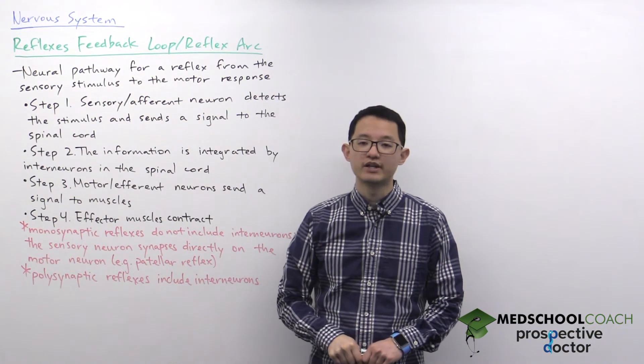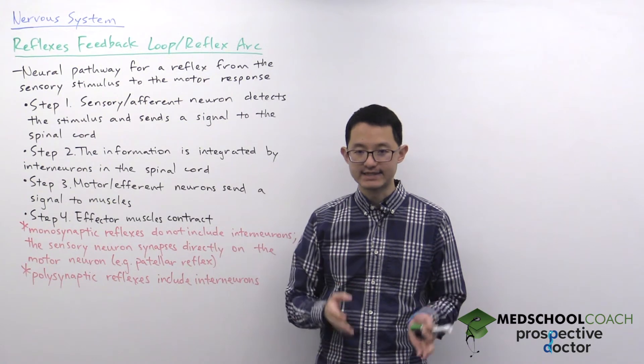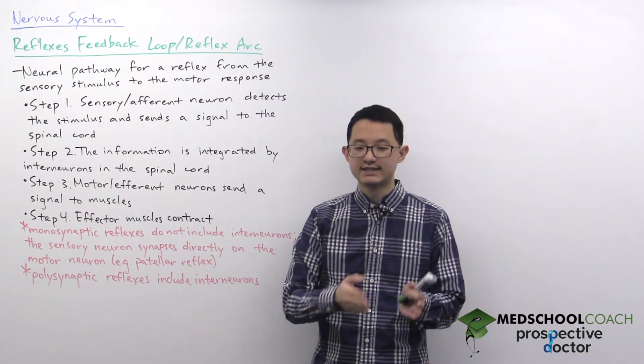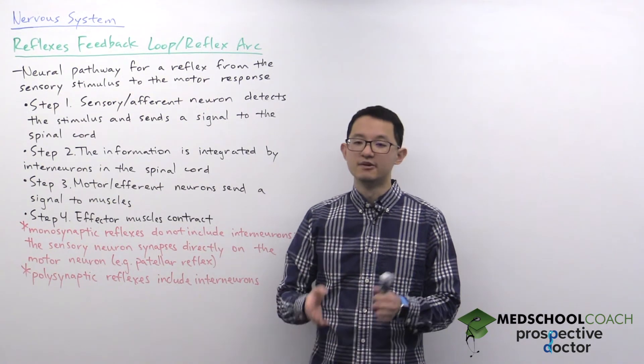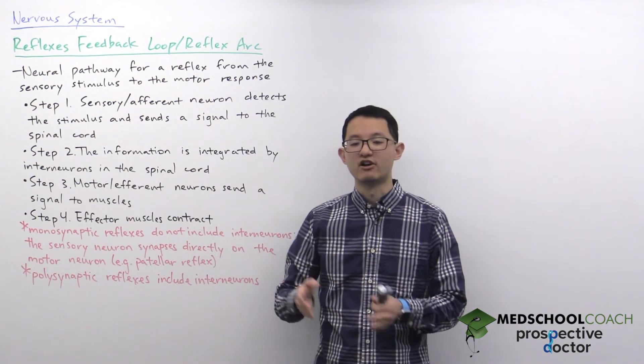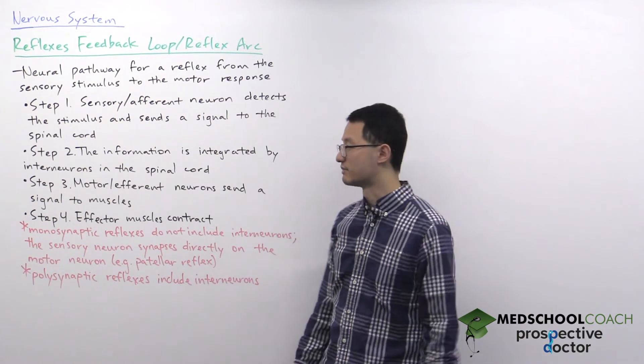A good mnemonic to memorize this is SAME: Sensory neurons are Afferent, Motor neurons are Efferent. That's helpful to keep in mind.